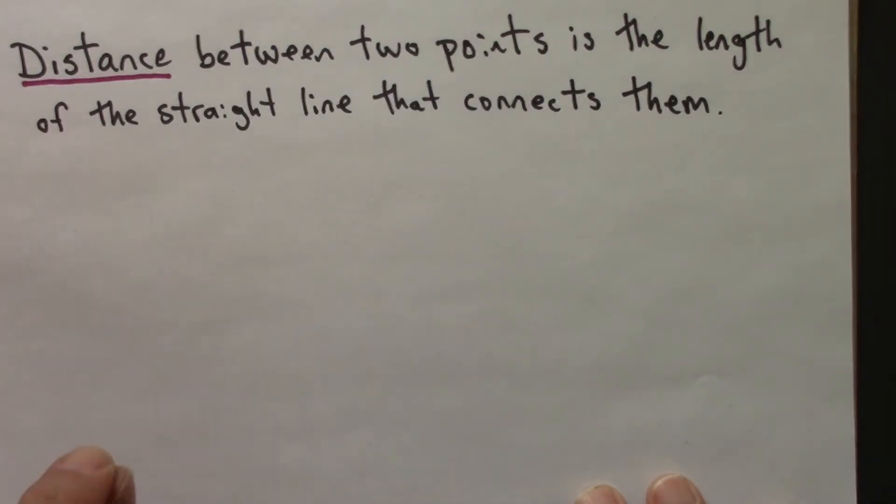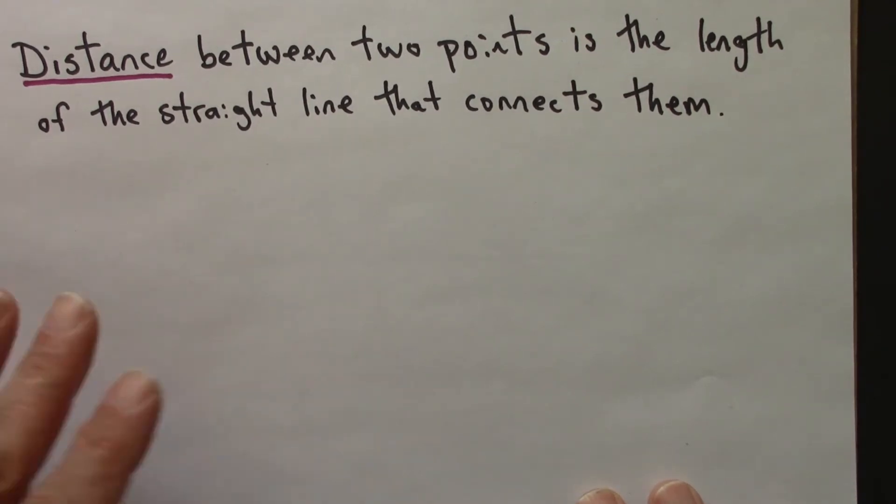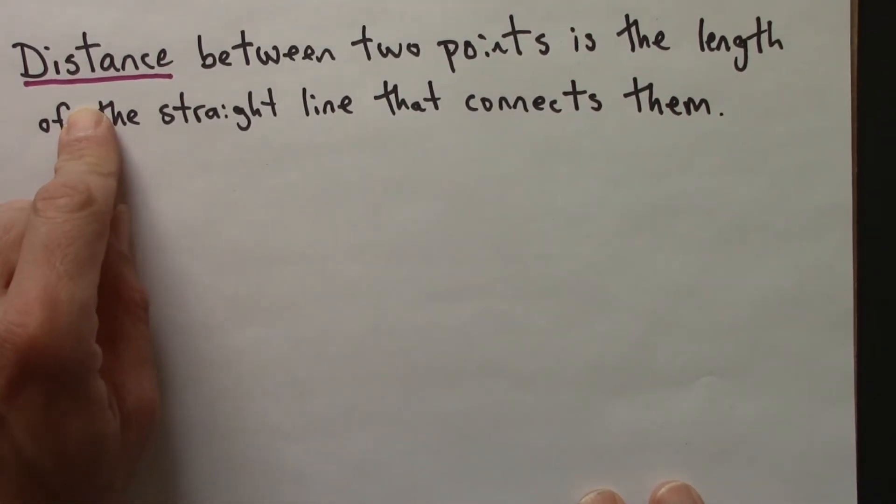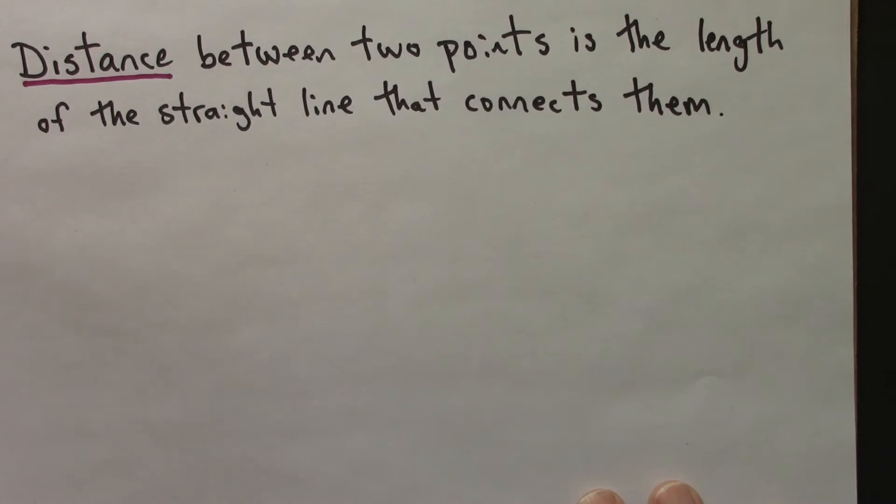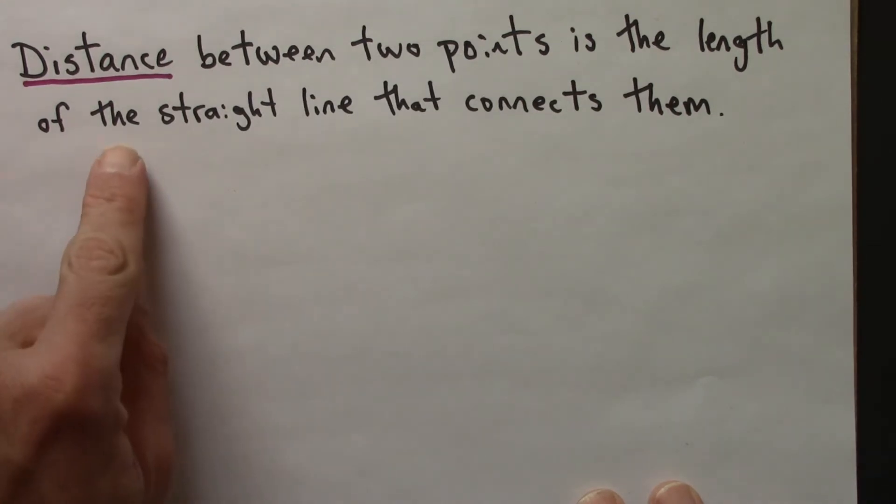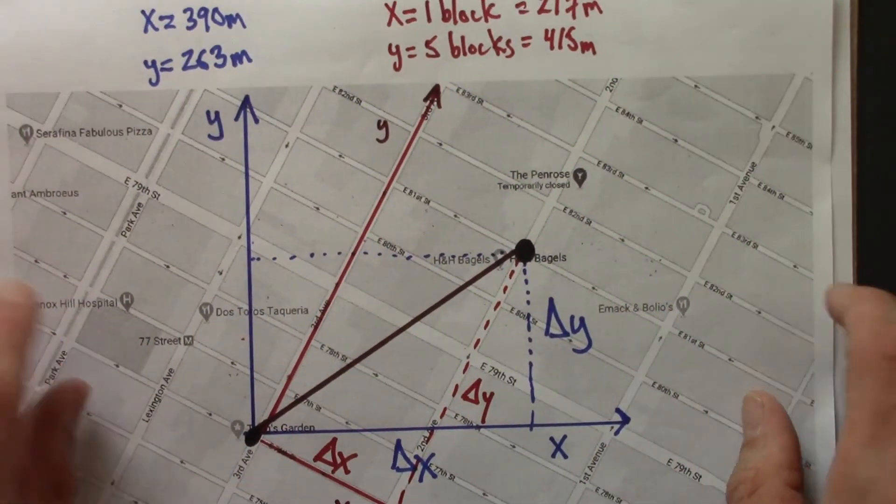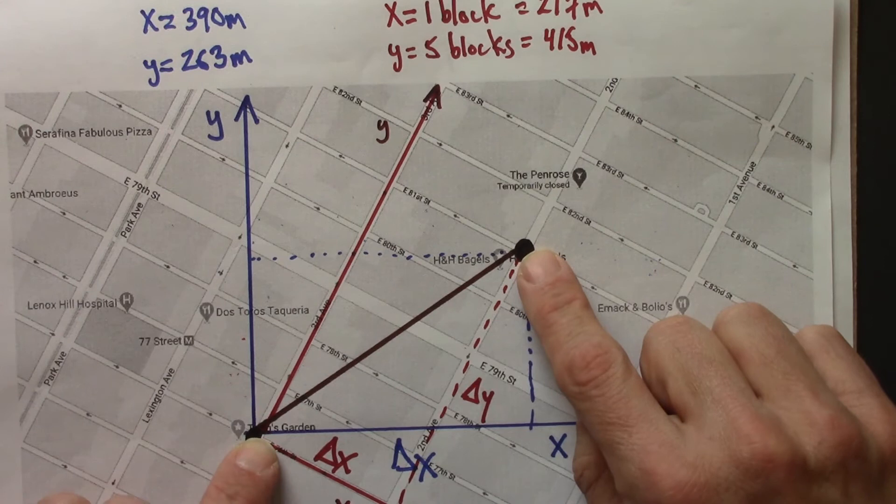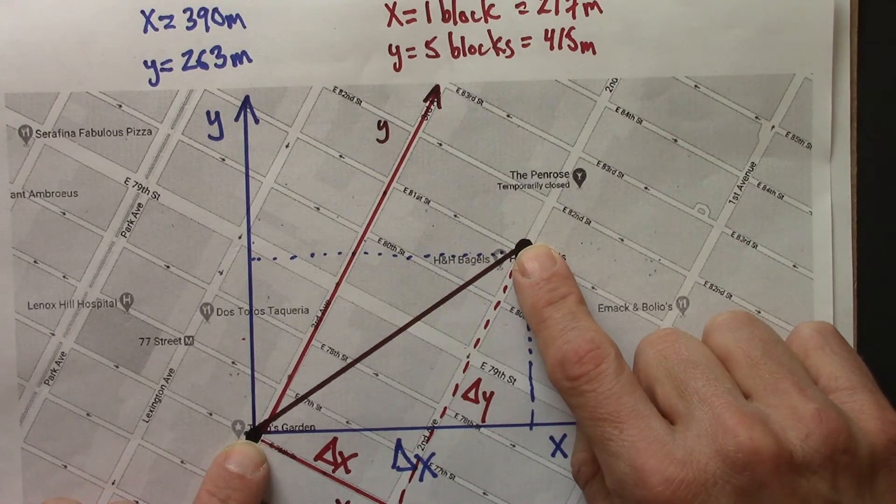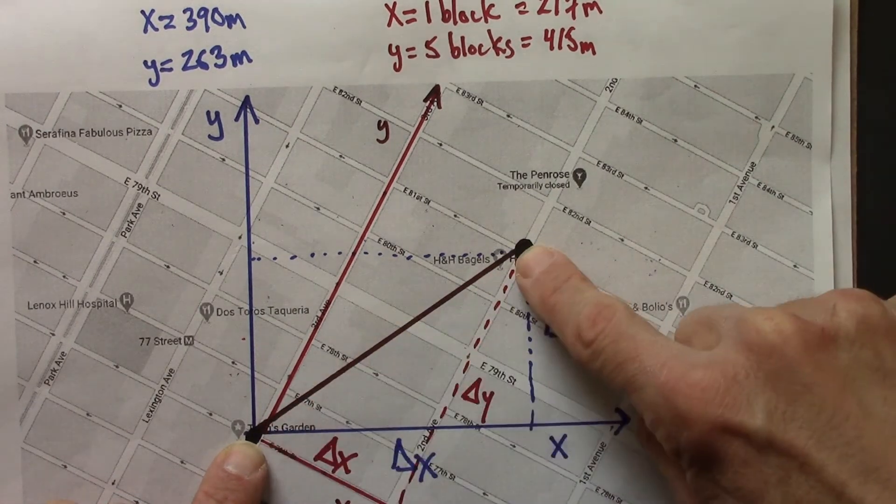Then the distance is defined as follows. The distance between two points is the length of the straight line that connects them. I say the straight line and not a straight line because there's one and only one line that connects any two points.